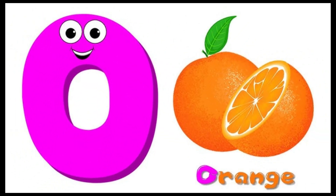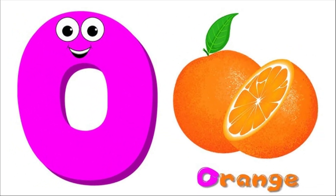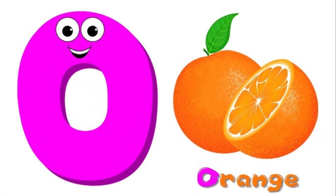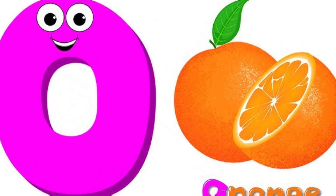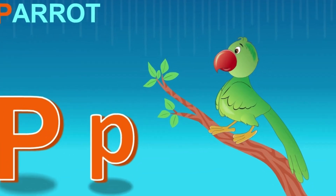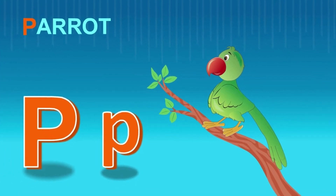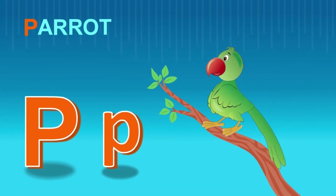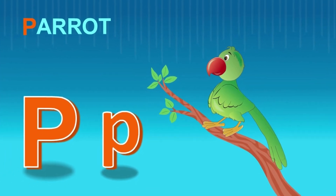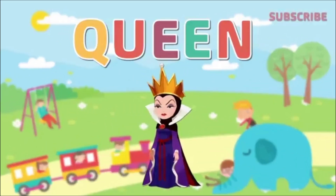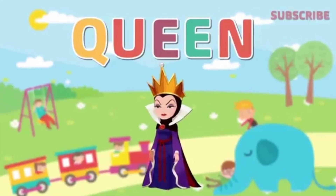O is for orange, orange means santra. P is for parrot, parrot means tota.